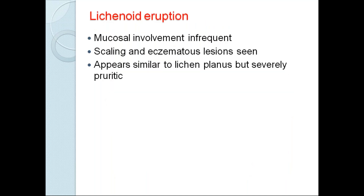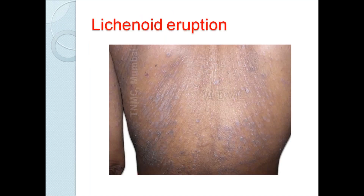Next is lichenoid eruption — lichen planus-like lesions. Mucosal involvement won't be present. There is scaling and eczematous lesions that look similar to lichen planus but are very itchy. You can see well-defined violaceous papules, just like in lichen planus. But lichen planus will have oral involvement, which won't be seen here. Also, photo-exposed areas of the body will normally have lichenoid eruption. A biopsy can help in differentiating.